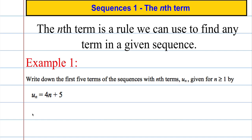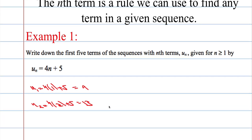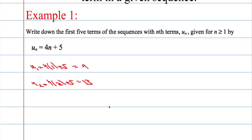So the first term, u(1), is going to equal 4 times 1 plus 5, which equals 9. u(2) will be 4 times 2 plus 5. 4 times 2 is 8, and 8 and 5 is 13. You're just substituting different values of n in.